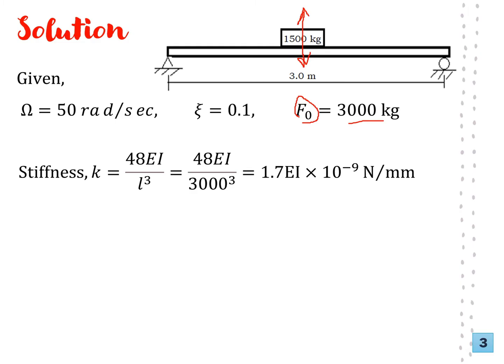So with that, the first thing we need to do is to calculate the stiffness. Now you see, this is a roller support and this is pinned. Remember, you can click on our lecture lesson one or two, I'm going to show you in the link here. Click that video. You'll be able to see for different support conditions what is the equivalent stiffness expression. So the stiffness is k = 48EL/L³ which equals 1.7E1 × 10⁻⁹ N/mm.